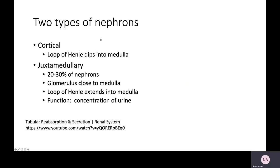There are two types of nephrons: the cortical nephron and the juxtamedullary nephron. The cortical nephron has a loop of Henle that dips into the medulla. The juxtamedullary nephrons make up about a quarter of nephrons; their glomerulus is close to the medulla rather than in the middle of the cortex, and their loop of Henle extends quite deeply into the medulla. Their job is to concentrate urine.